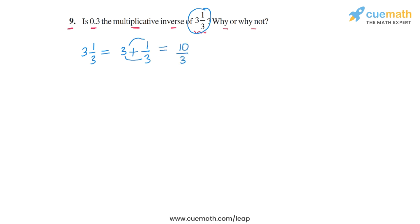So we basically now have to check whether 0.3 is the multiplicative inverse of this number 10 by 3. So let's multiply the two numbers. We do 10 by 3 into 0.3 and let's check whether this product is 1 or not.